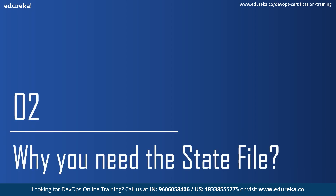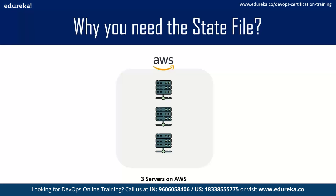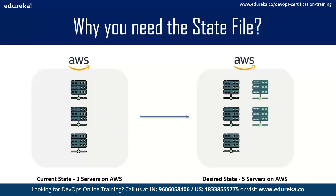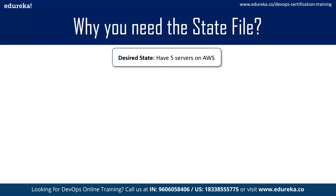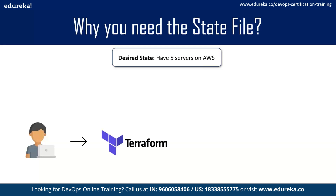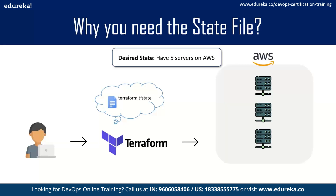Now let's understand the significance of the state file and why you need it. Suppose we have three servers running on AWS and we want to change that to a total of five servers. To achieve this desired state, the user uses Terraform. Terraform refers to the state file to know what already exists on AWS — it sees that three servers are already deployed — so Terraform adds two more and achieves the desired state.